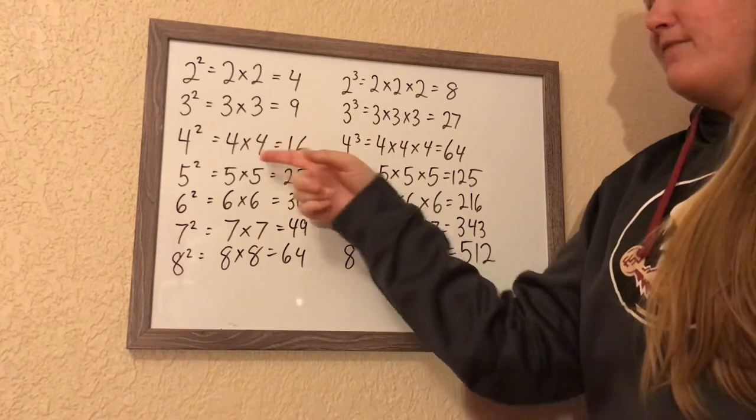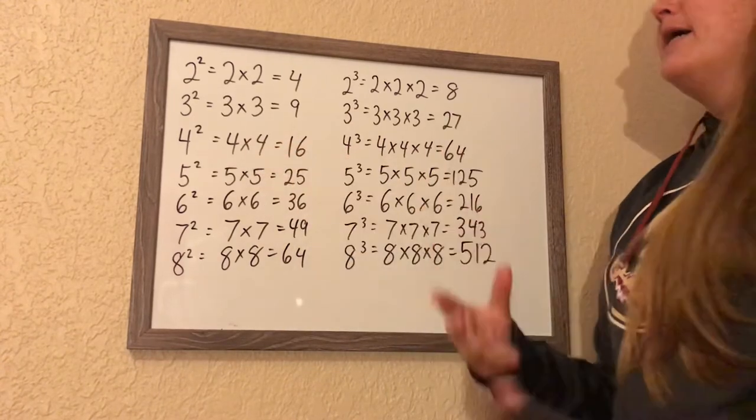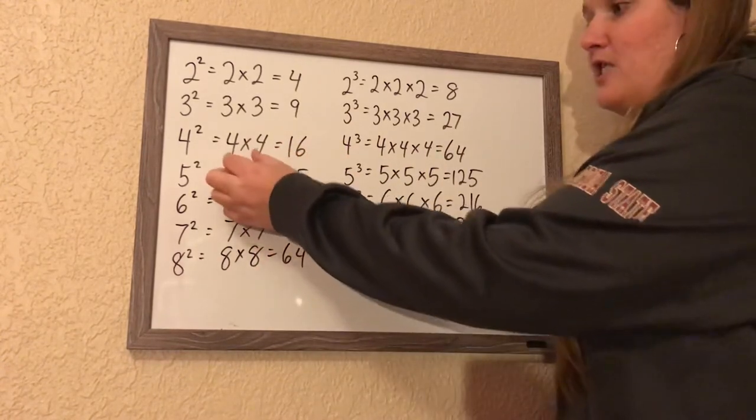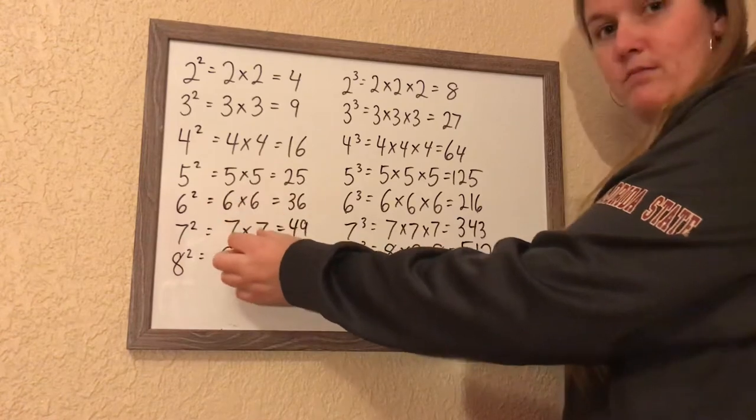16 can be divided by 4 and 4. A square number means it has two of the same factors.